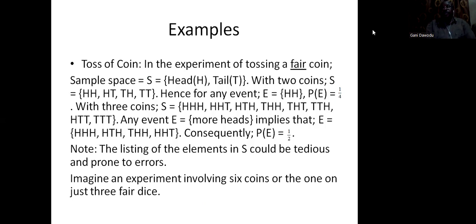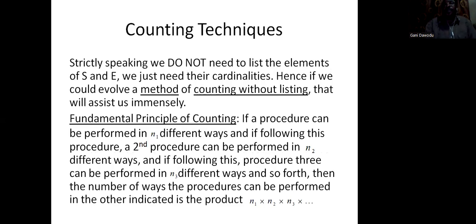Examples. The flip of a fair coin. The word fair there addresses an unloaded coin, an unbiased coin, a coin that is well behaved. Now, if you flip a fair coin, the sample space will be H for head, T for tail. When there are two coins, this is the scenario. When there are three coins, that is the case. Imagine if there are six or more coins. You see, it becomes cumbersome. And it will be tedious trying to list. So we must try to evolve a way of knowing the cardinality of the sample space without having to list. And that takes us to the principle of counting.